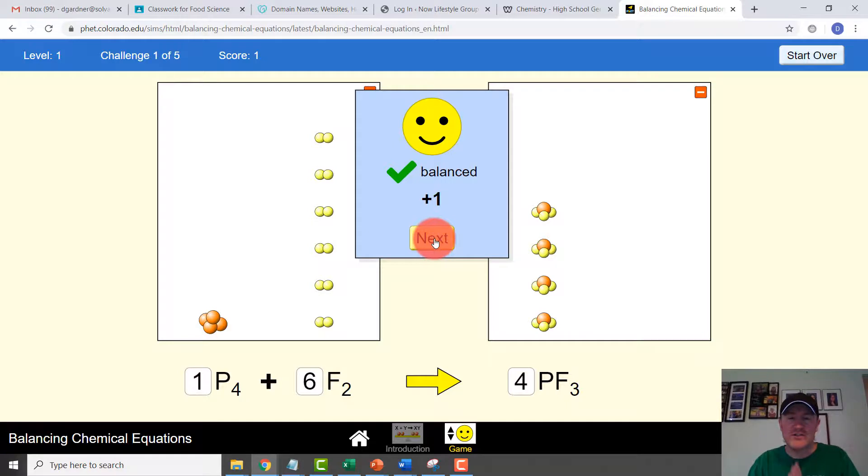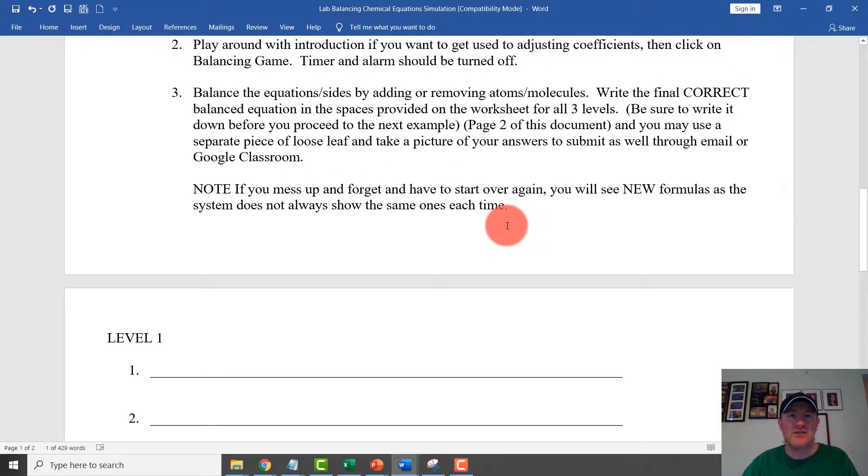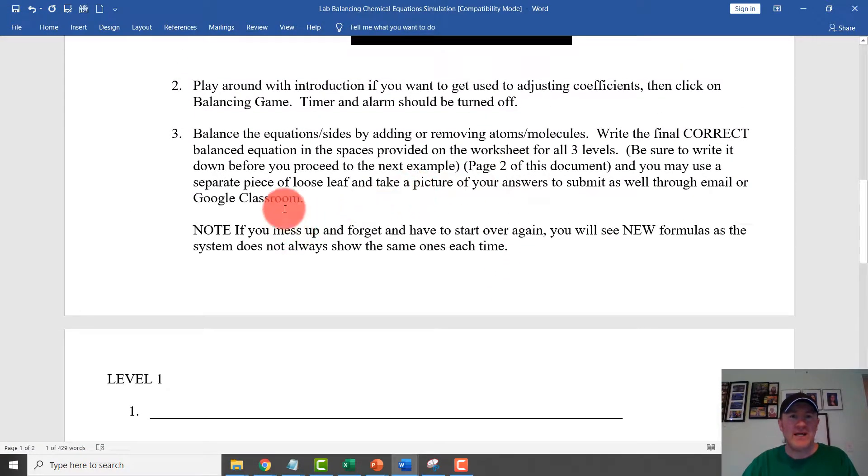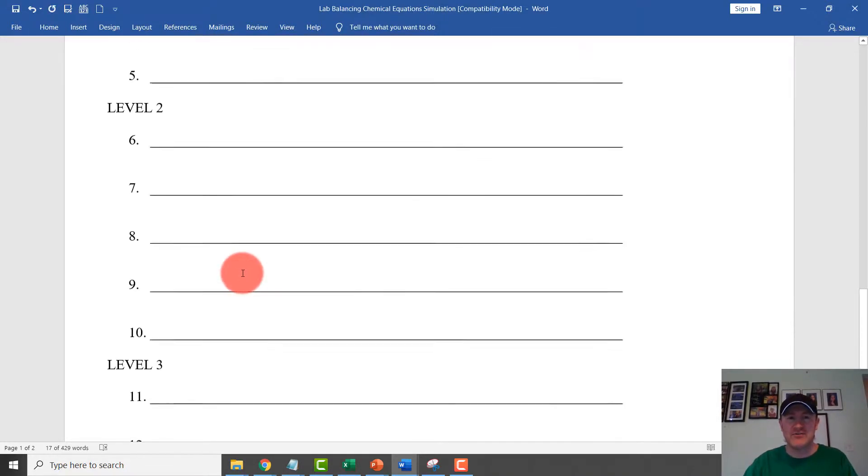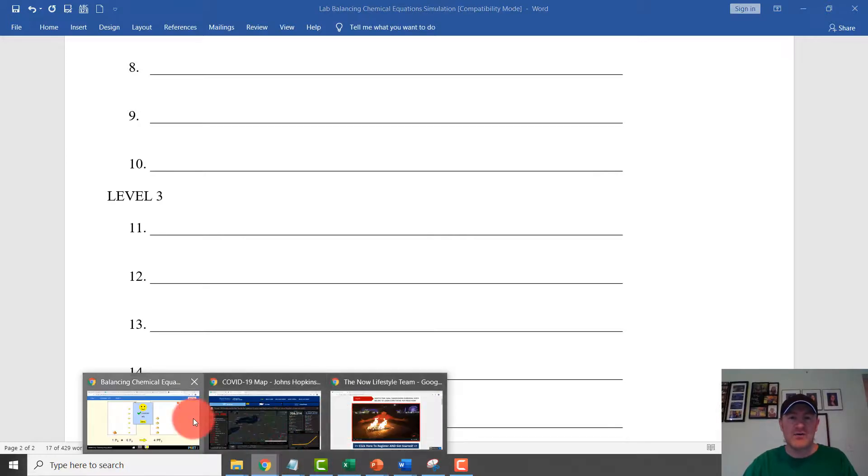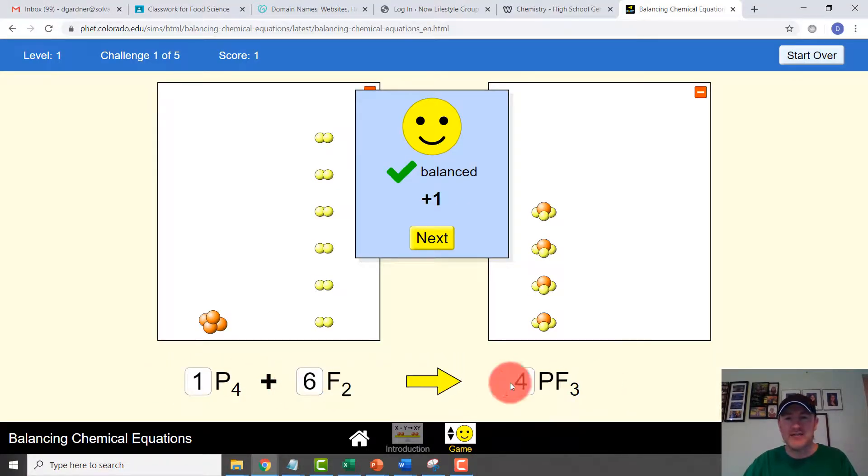Now, what you need to do before this is crucial. This direction before you click next, we're going to go back here for a minute. Notice it says in the directions, it says, I'm going to highlight it. So balance the equations by removing our atoms, molecules, what we've been doing is and showing as examples. Now, what you need to do down here in your document or on our loose leaf, write the correct final balanced equation in the space provided for all three levels. So you need to have 15 answers when you're done. You need to have 15 answers when you're done. And so what you're going to do, you're going to take and you're going to write this answer.